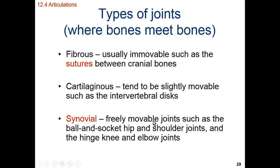We can also have cartilaginous joints. These are typically joints that are very slightly immovable — you can typically have about five to ten degrees of motion, so there's a little bit of movement but not that much. These cartilaginous joints are always going to be associated with fibrocartilage. Between the vertebrae, we can have about five degrees of movement per joint, and there are intervertebral discs — those fibrocartilage shock absorbers — in between. Another example of a cartilaginous joint is between the two pubic bones that make up the pelvic girdle — the pubic symphysis, that fibrocartilage patch there.